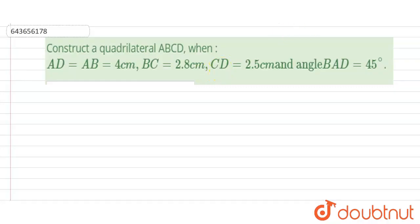So hello students, in this problem we are required to construct a quadrilateral ABCD when its side AD equals AB equals 4 cm, and BC is given 2.8 cm, and CD is given 2.5 cm, and the angle BAD is given 45 degrees.